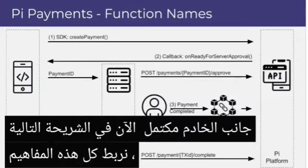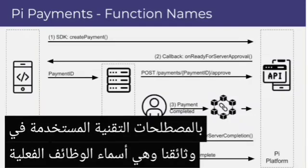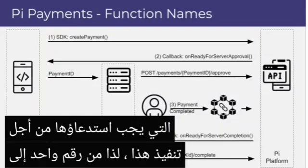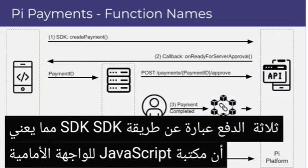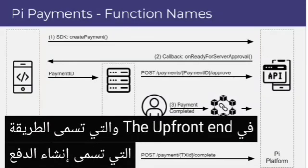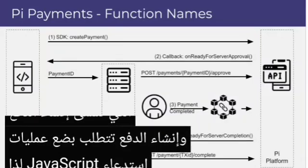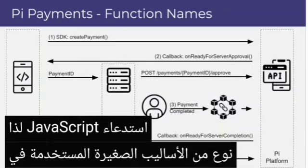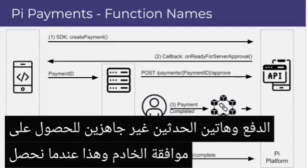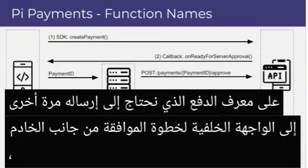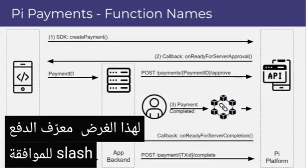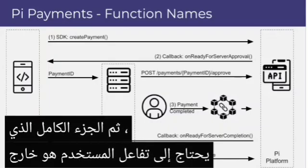On the next slide, we're linking all of these concepts with technical terms used in our documentation — the actual function names and API endpoints that will have to be called to implement this. Number one, to create the payment is an SDK method — SDK meaning the front-end JavaScript library that gets integrated into the app front end. The app front end calls the method called createPayment, which takes a few JavaScript callbacks — small methods used to handle events on the payment. One of those events is onReadyForServerApproval, and this is when we get the payment ID that we need to send back to our back end. The REST API endpoint used for this is payment/{paymentId}/approve.